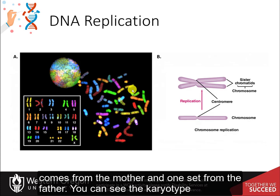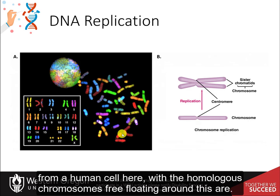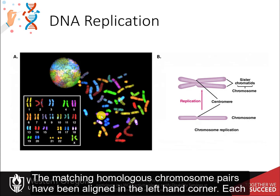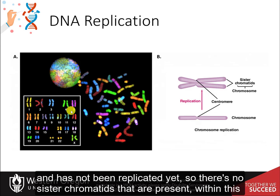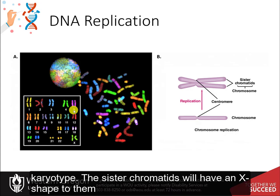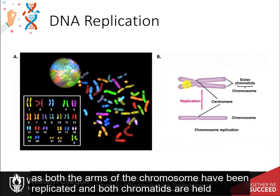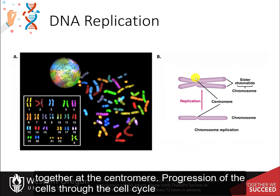One set of homologous chromosomes comes from the mother, and one set from the father. You can see the karyotype from a human cell here, with the homologous chromosomes free-floating, and the matching homologous chromosome pairs aligned in the left-hand corner. Each chromosome is in its linear form and has not been replicated yet, so there are no sister chromatids present. The sister chromatids will have an X shape, as both arms of the chromosome have been replicated and both chromatids are held together at the centromere.